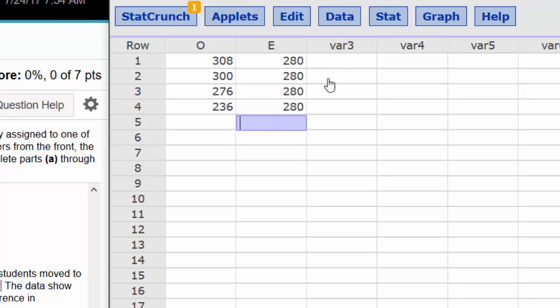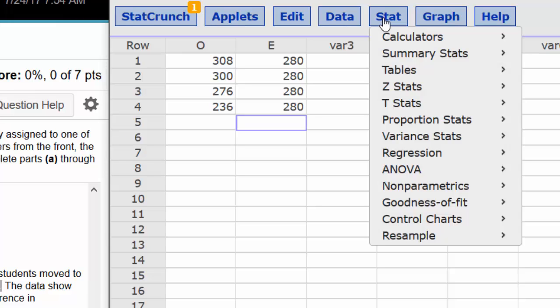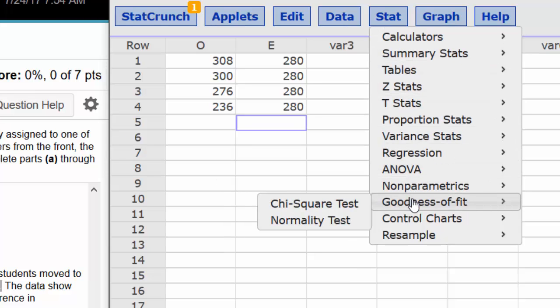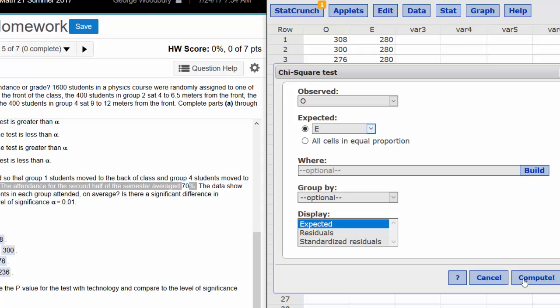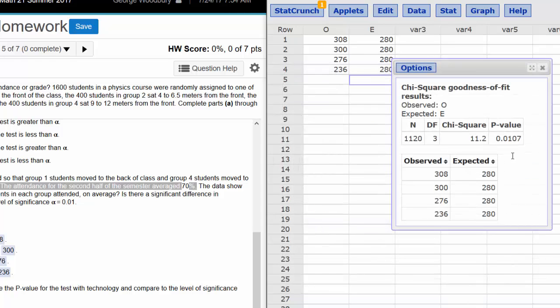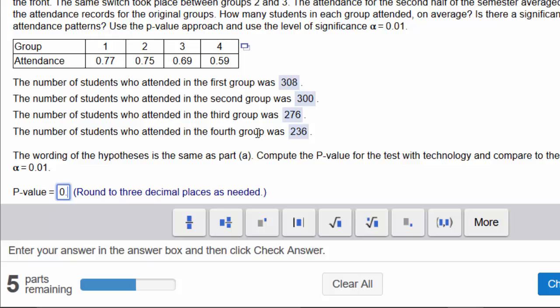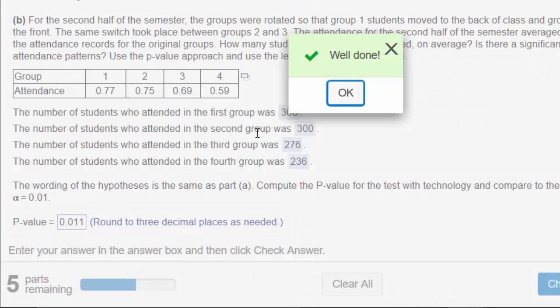And I can rerun the same test. Stat, goodness of fit, chi-square test, the observed in column O, expected in column E, compute. The p-value is 0.0107. But I've learned from last time, I only need three decimal places. That's 0.011 rounded to three places. Well done.